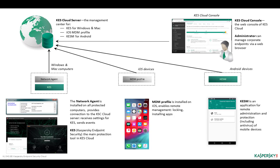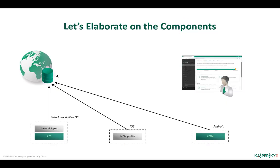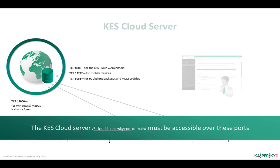Fourth, Mobile Device Management profile — protection for iOS devices. Fifth, Kaspersky Endpoint Security for Mobile — protection for Android mobile devices. Kaspersky Endpoint Security Cloud must be accessible from the administrator's computer over TCP ports 8080 and 8081. The former port is a must; the latter is advisable. From all managed Windows and Mac workstations and servers, access is over TCP 13000.